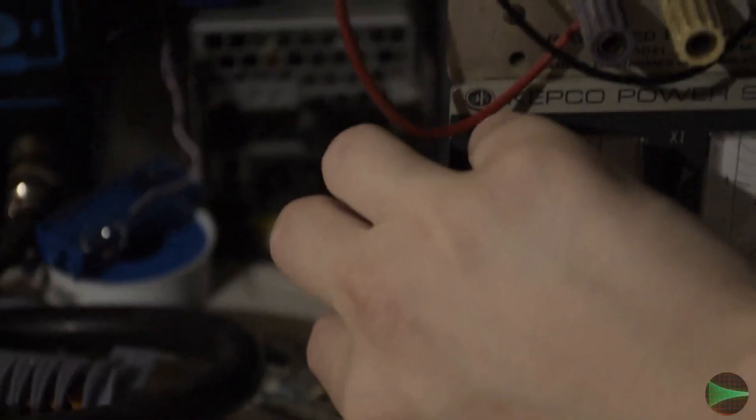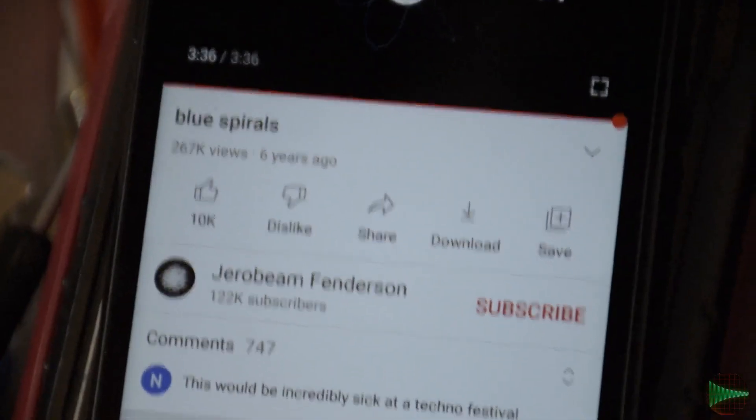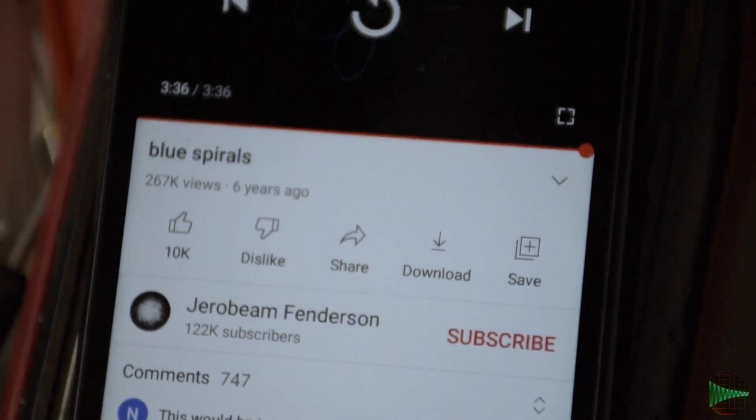So without further ado, I'll get this camera on the tripod and set up and we'll turn the circuit on via the single 12 volt power supply. I'll get a neon bulb there and on my phone, which will be my audio source, I'll just go ahead and play Jerovian Vindersen's Blue Spirals. It's the best one I've found for this specific setup that I have.